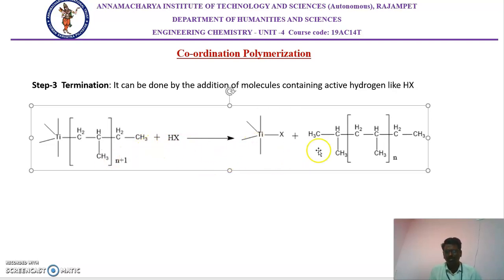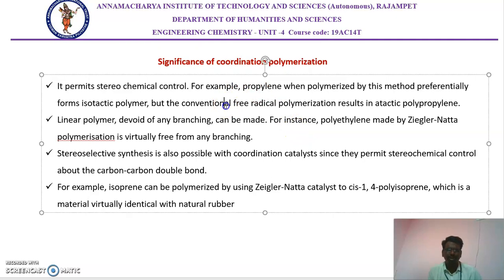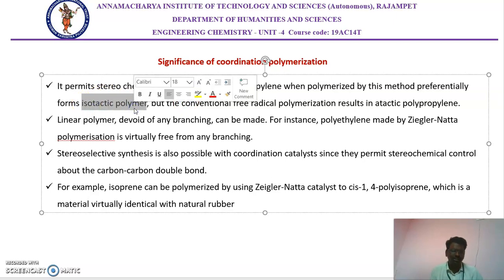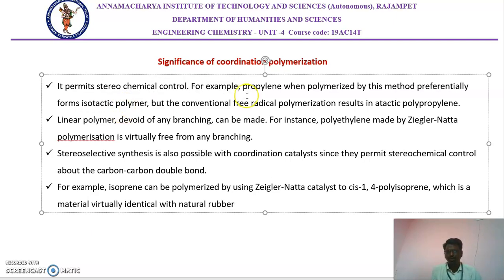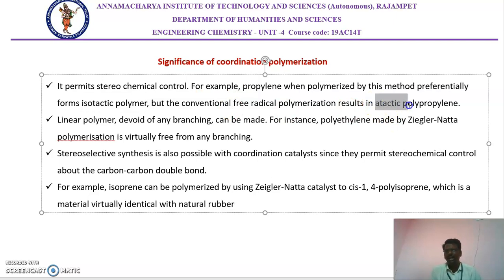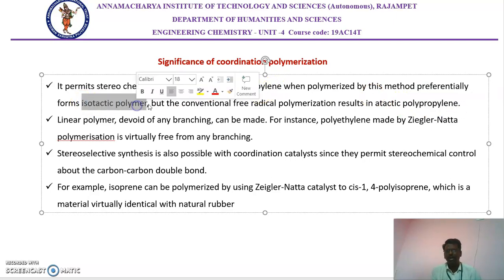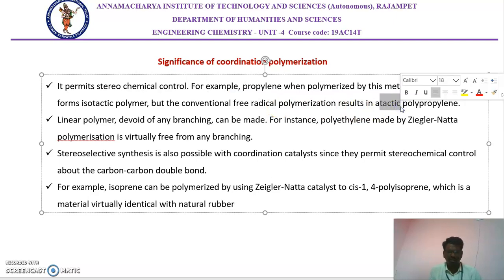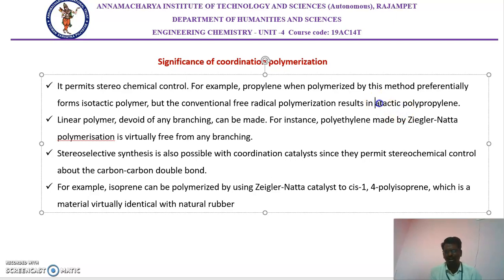This kind of polymerization reaction is used to prepare linear chain polymers. The main significance of coordination polymerization: first is stereo control. If we want to prepare an isotactic polymer, we can use this method. Isotactic means functional groups are present in the same direction throughout the backbone polymer chain. Using this method, we can achieve isotactic polymerization, whereas conventional free radical or ionic polymerization of propylene results in atactic only. Atactic means the functional groups are present in random positions — some in one direction and some in the opposite — with no uniform arrangement.